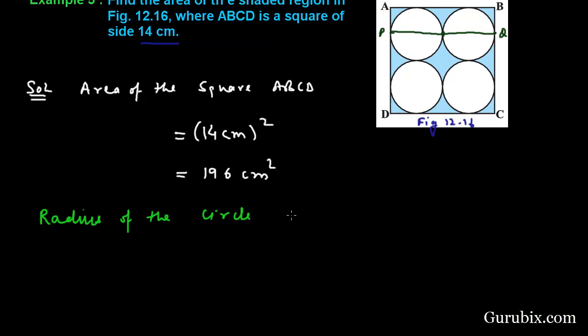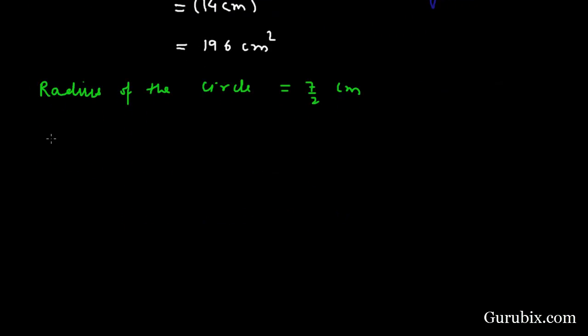Now we can easily find out the area of one circle. Area of one circle will be π r squared. π is 22 over 7, r is 7 over 2, then it will be 7 over 2 times 7 over 2 centimeters squared.